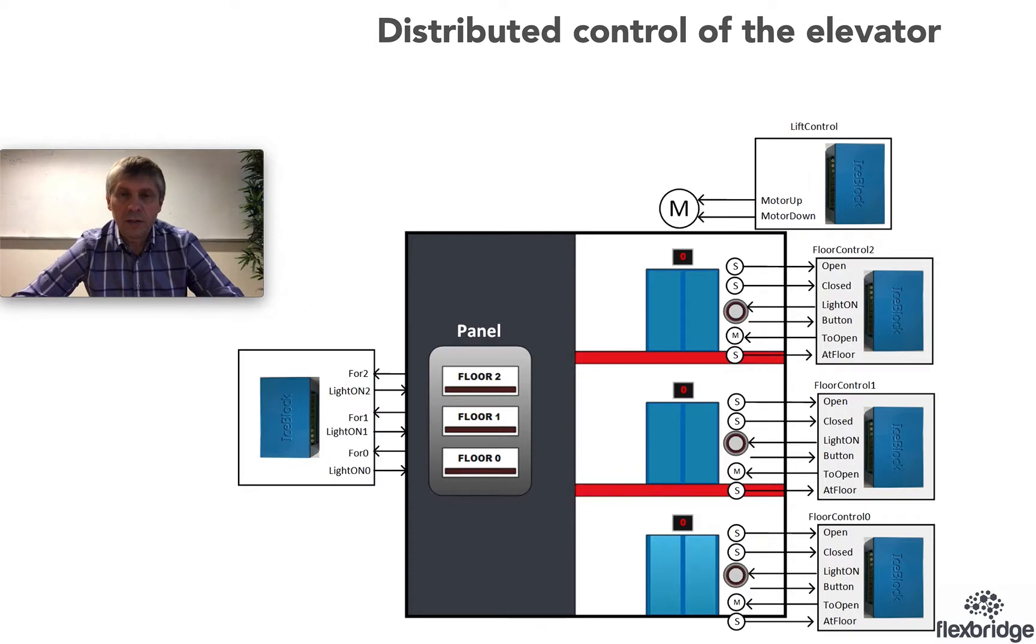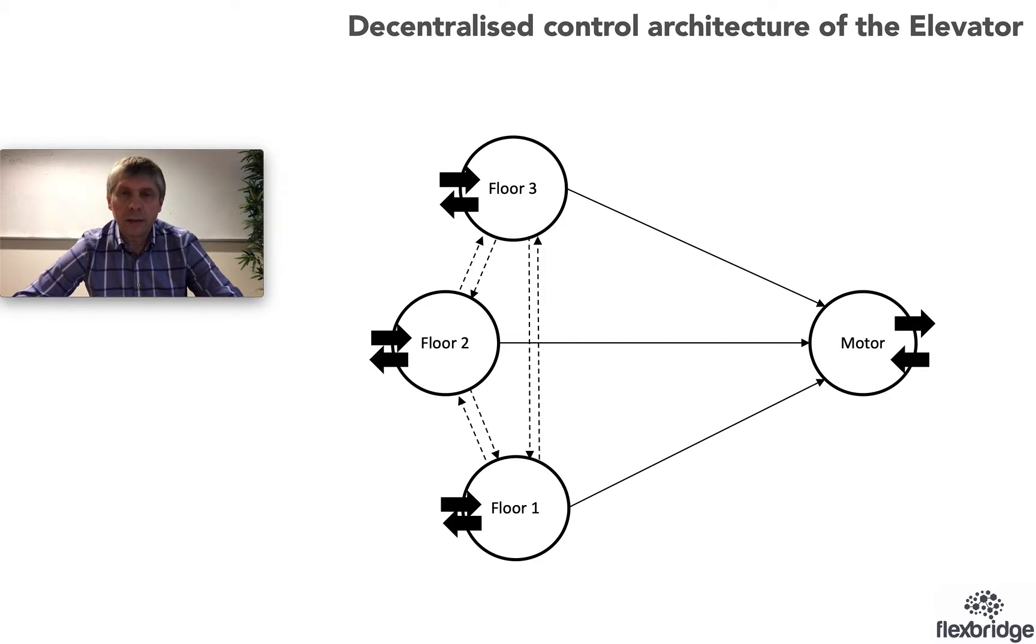In the distributed architecture for the elevator we could have up to five devices where one control device will be sitting in the cabin and reading button presses inside the cabin. Three more devices will be located at each floor and one more at the motor that moves the cabin up and down. The overall architecture of our system could look like this: at every floor we will have a floor controller and these three floor controllers will be receiving pressing of the button signals and will be deciding among each other in collaboration to which floor the cabin needs to be moved. Once they agreed they can tell the motor and the motor will perform this operation.